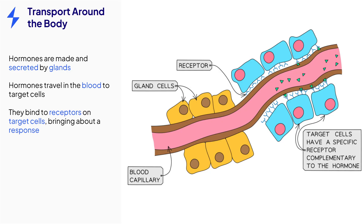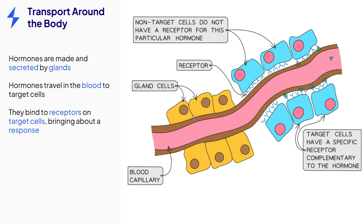When the hormone binds to the receptor on the target cell, it triggers chemical reactions in the target cells that bring about the required response. It is possible for one hormone to have lots of different target cells. For example, there are lots of different types of target cells that respond to the hormone adrenaline, because adrenaline causes lots of reactions in different parts of the body. Any cell that does not need to respond to the hormone is called a non-target cell and does not have any receptors that can bind to the hormone.